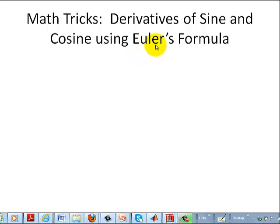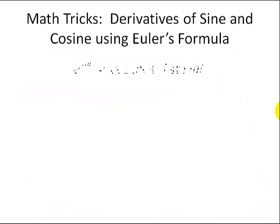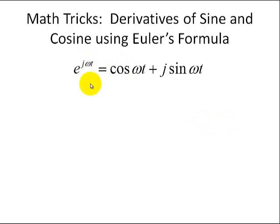Again, we're going to use Euler's formula to show this. Here's Euler's formula that you'll encounter in signals and systems, digital signal processing, or other systems courses. We have e to the j omega t is equal to cosine omega t plus j sine omega t.